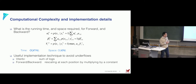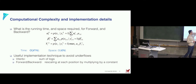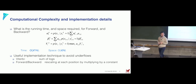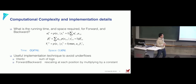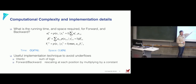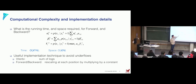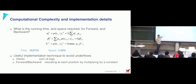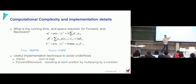The sum-product algorithm is polynomial. For each iteration, the time complexity is quadratic in the number of states and linear in sequence length. There is also space complexity — but you only need to store the alpha vector and the beta vector, each of length K. That's all you need.